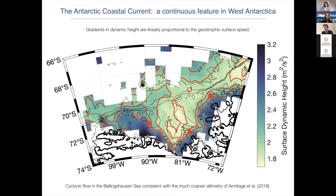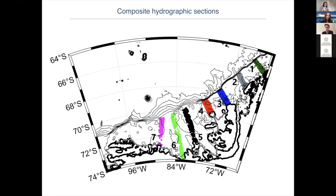What Ryan did was interpolate the data, collected as a function of depth, onto different density surfaces. I'm giving you an example of what one of those might look like — a density surface sitting at the boundary between the upper ocean and the winter water layer and what sits below in the circumpolar deep water layer. There's a very clear signature of both cooling and freshening as you move from east to west.